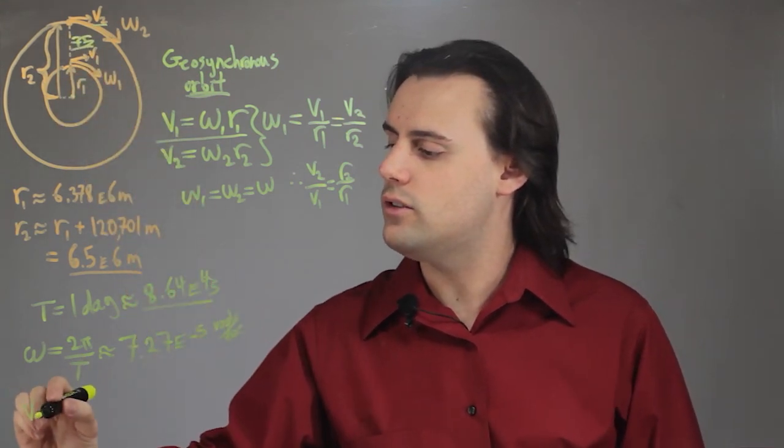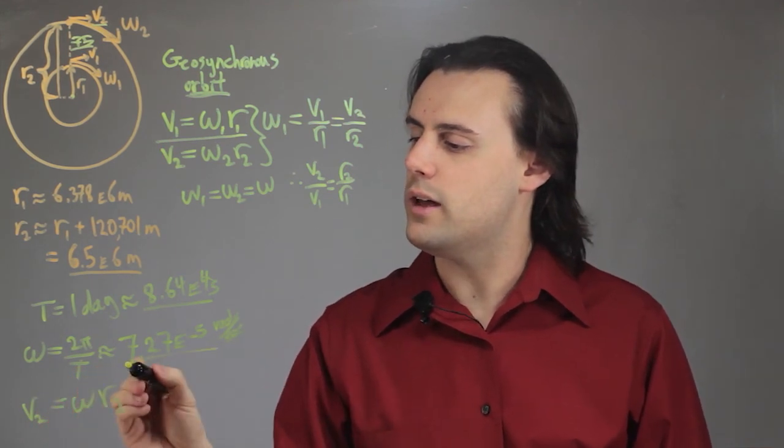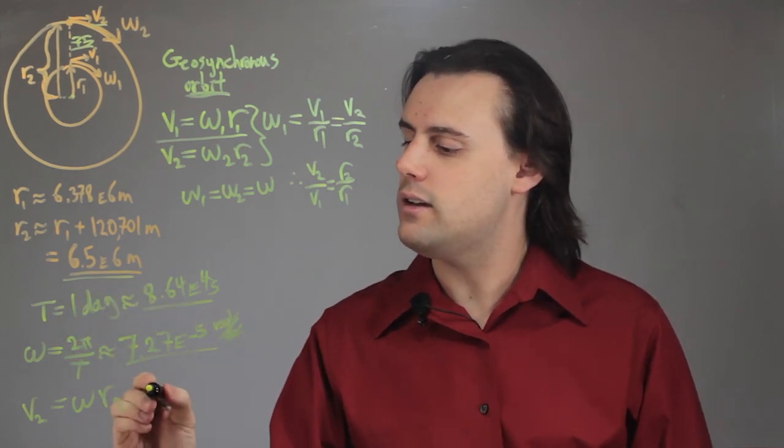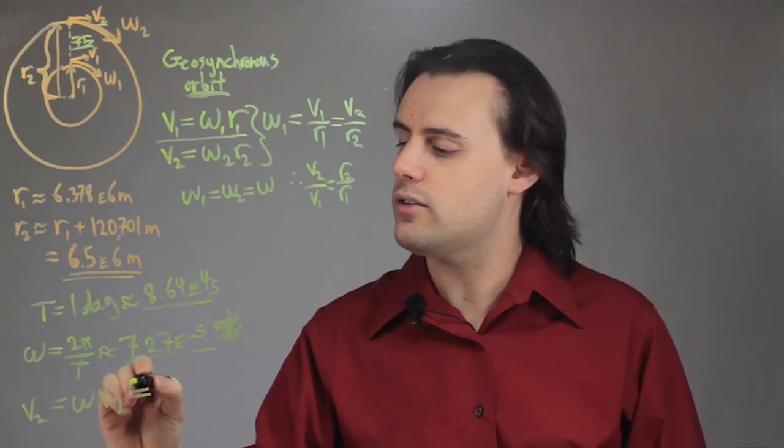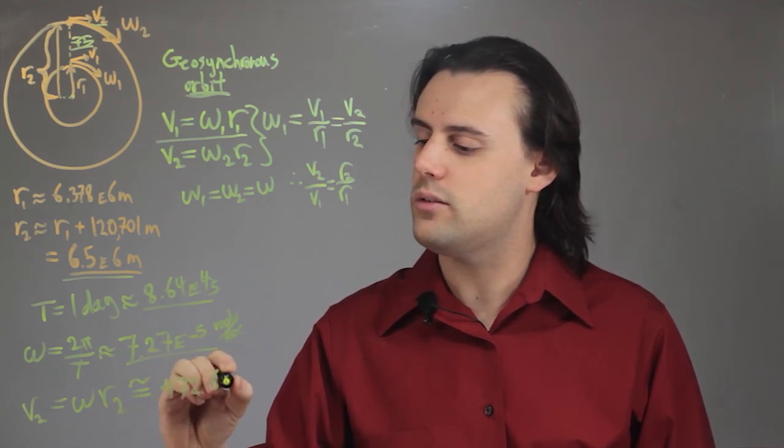v2 would simply be equal to omega times r2, so we multiply this number with this number, and we get a linear velocity of approximately 472.6 meters per second.